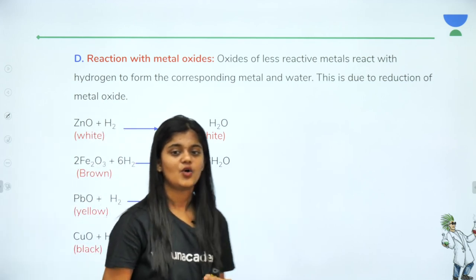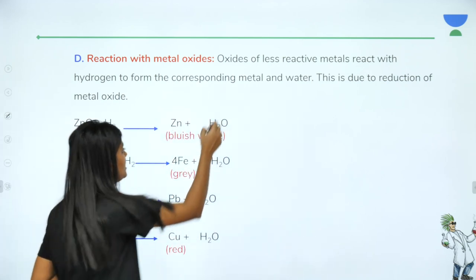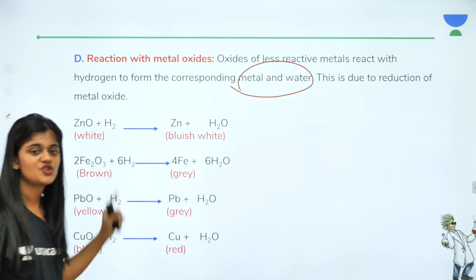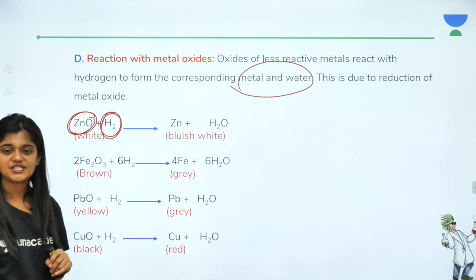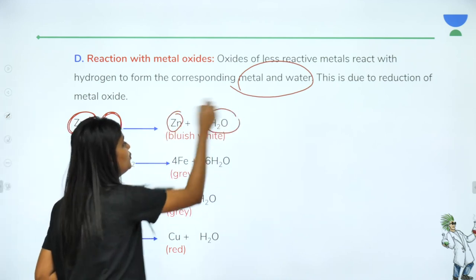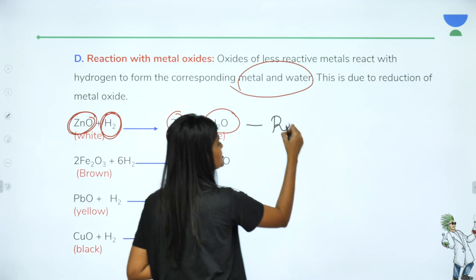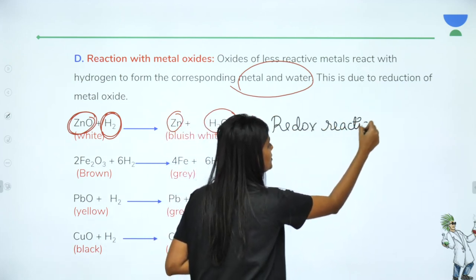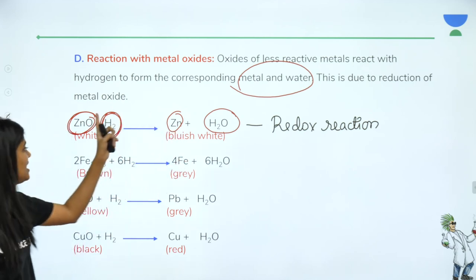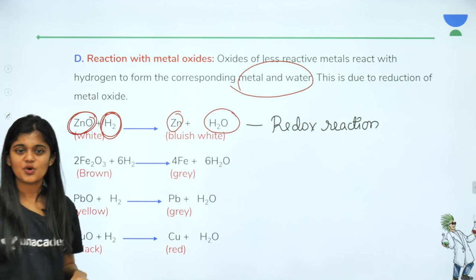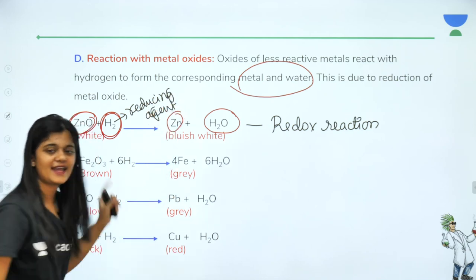Oxides of less reactive metals react with hydrogen to form the corresponding metal and water. For example, zinc oxide treated with hydrogen gives zinc and water. This is a redox reaction: zinc oxide is reduced to zinc, and hydrogen is oxidized to H2O, so hydrogen acts as a reducing agent.